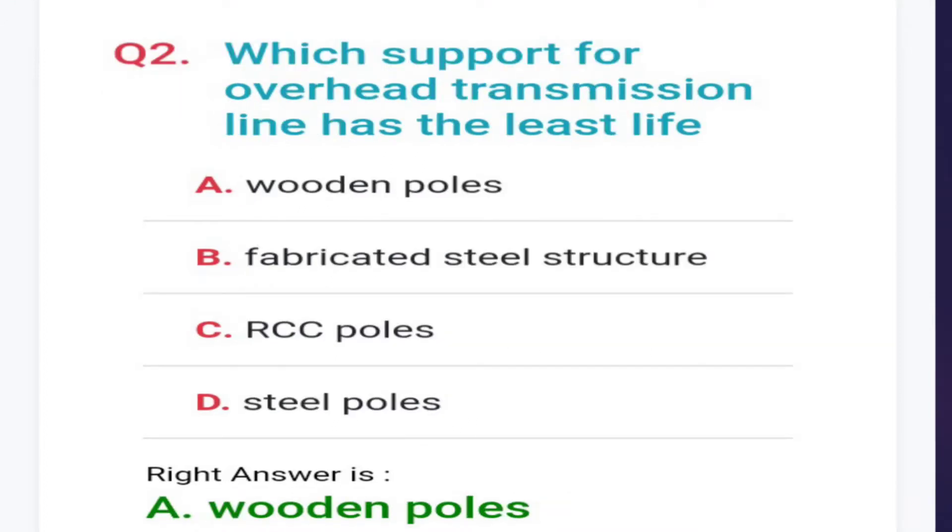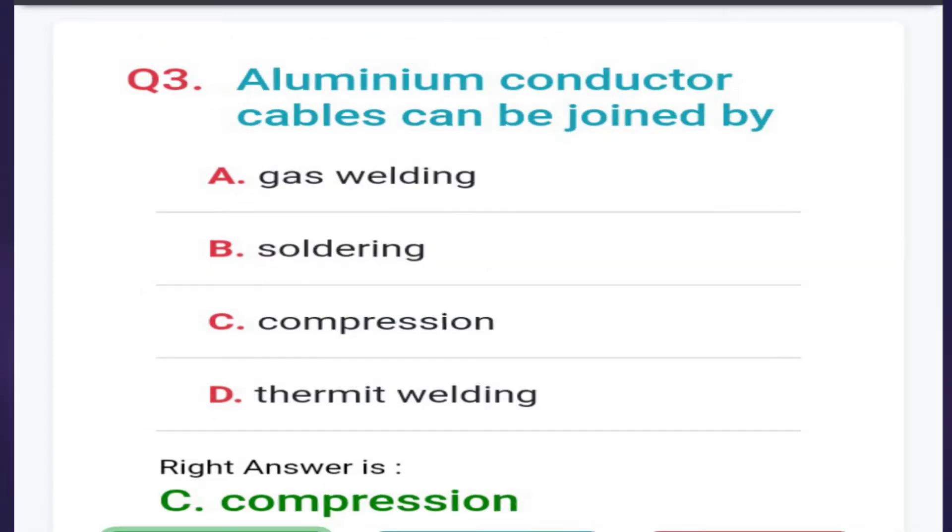Second question: which support for overhead transmission line has the least life? Options are wooden pole, fabricated steel structure, RCC poles, and steel poles. The answer is wooden poles.